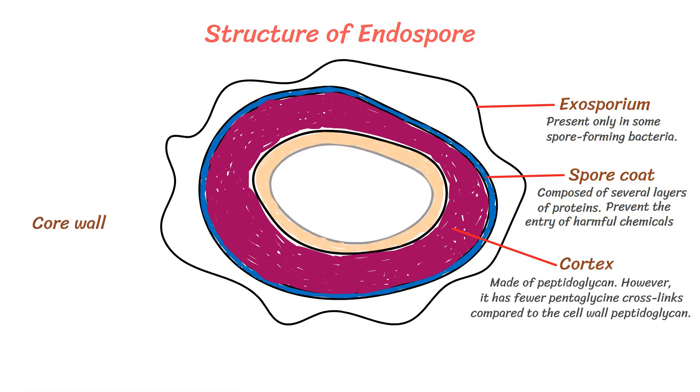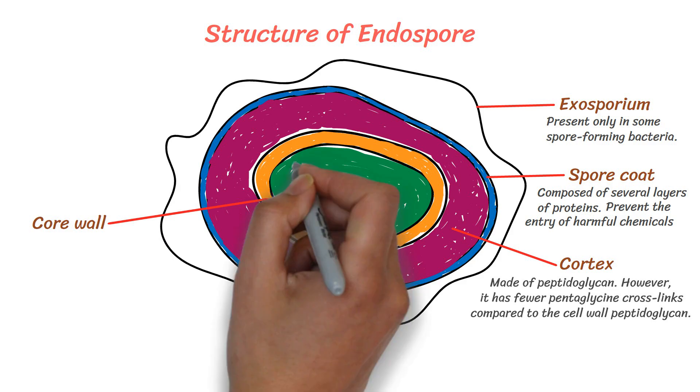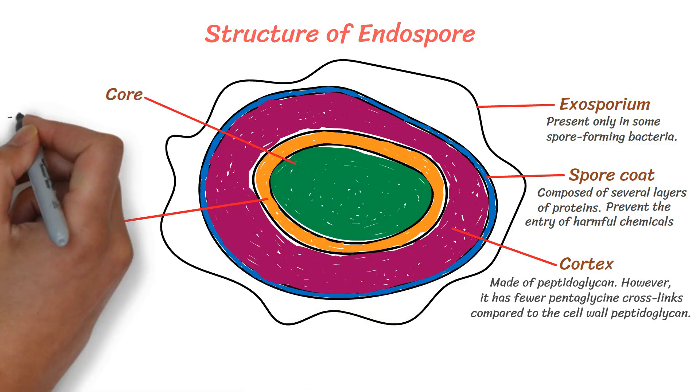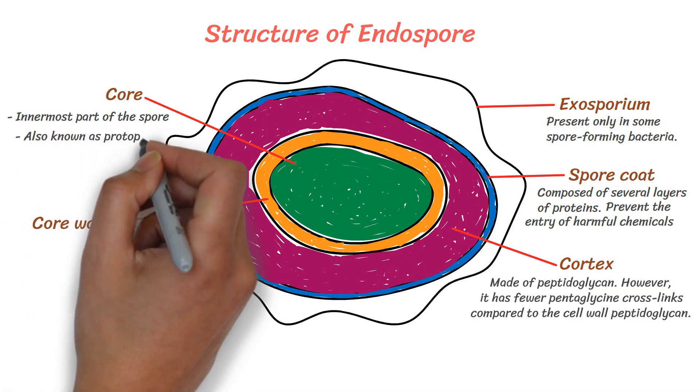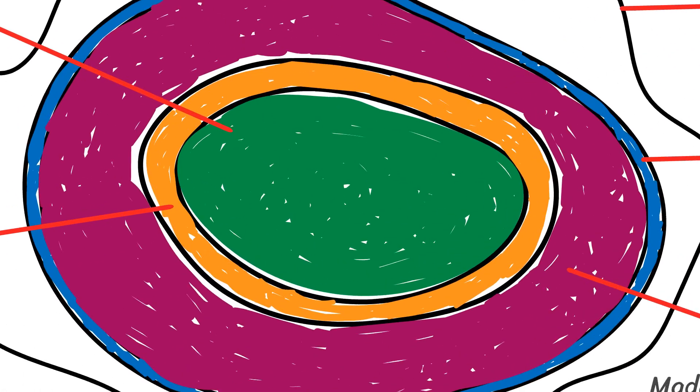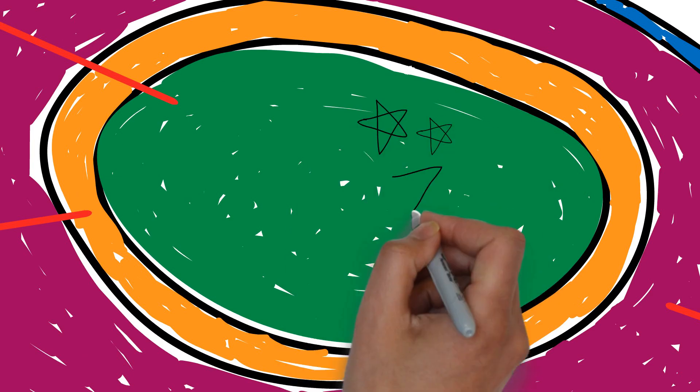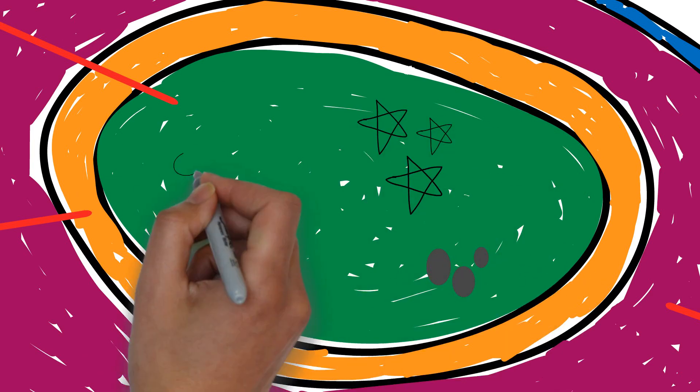The core wall lies beneath the cortex and surrounds the core. The core is the innermost part of the spore, also known as protoplast. The core is the central region of the endospore and contains the bacterial DNA, ribosomes, and essential enzymes.